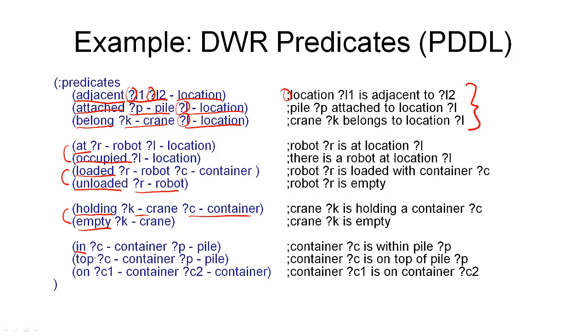Okay, remaining relations. We have an in relation, which tells us where a container is, in which pile a container is currently located. Then we have a top relation, which tells us which container is at the top of a given pile. And finally, we have an on relation, which tells us which container is on which other container.